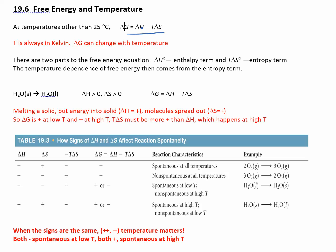We're looking at the signs of delta H and delta S. Let's think of one that you already know: melting of ice. You have solid water and you're turning it to liquid water. In order to do that, delta H has to be positive — it's an endothermic process, you're going to absorb heat. And going from a solid to a liquid, the entropy is increasing, you're becoming more disordered. So both delta H and delta S are positive.